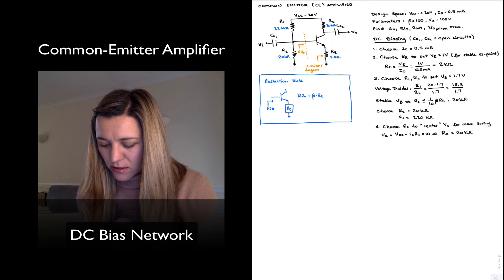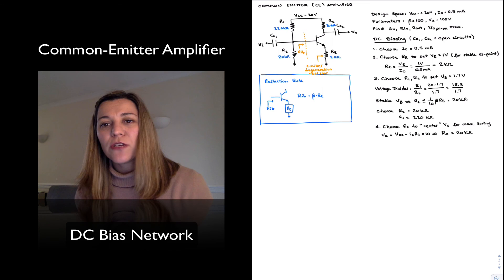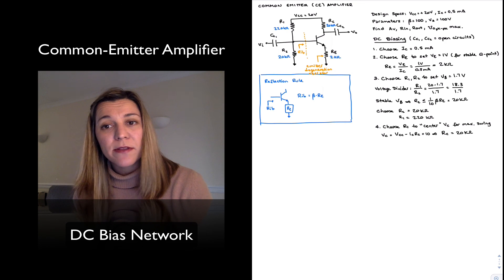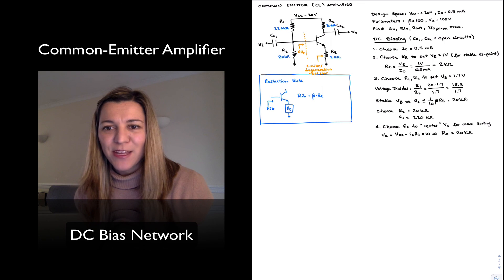The reason why it is referred to with that name is simply that degeneration is another name that is typically given to negative feedback. And that's exactly what the resistor is doing there. It's providing negative feedback to the circuit for temperature stability. Thank you.